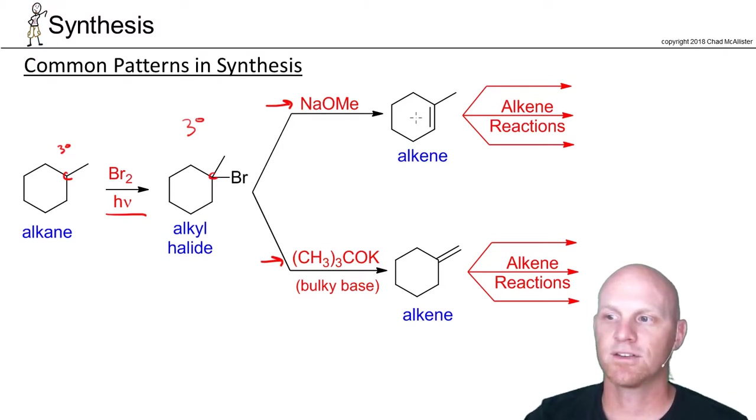And so Zaitsev product here, we get the more substituted alkene. Hoffman product, we get the less substituted alkene, and then we could go and do any one of our host of alkene reactions.